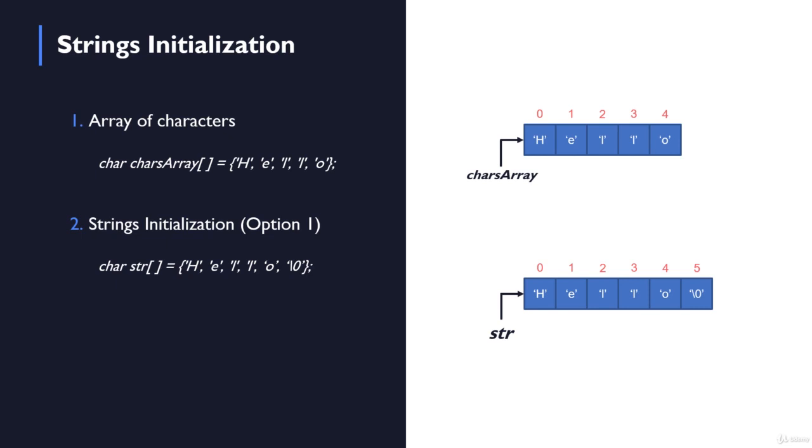Before we move on, I want us to take a look at another way to initialize the string. The second way is kind of different from the first way and involves the usage of double quotes. For example, we simply write char, which is the type, str, and square brackets.